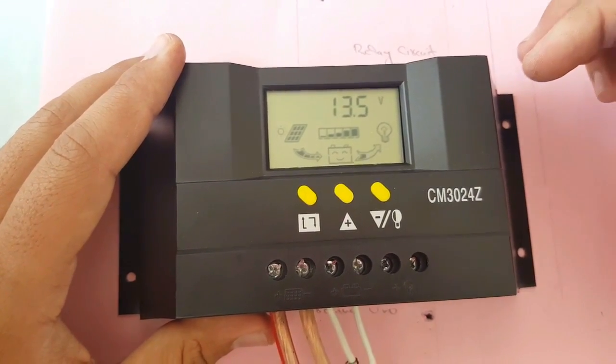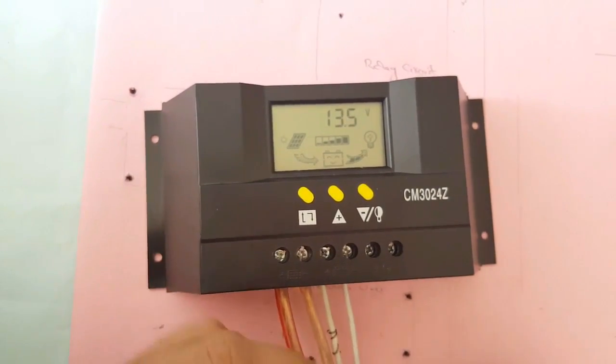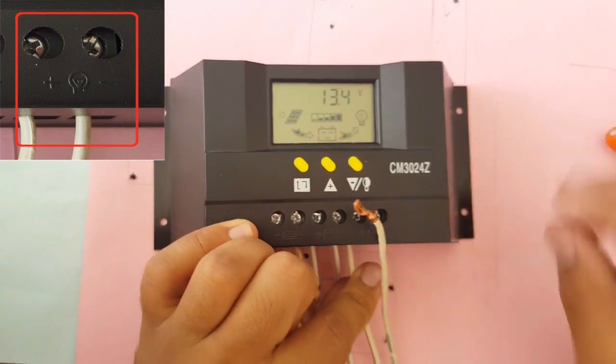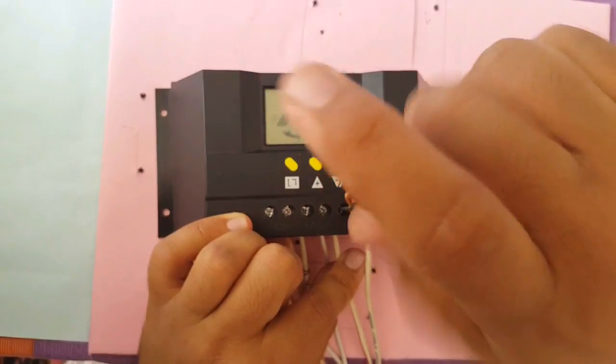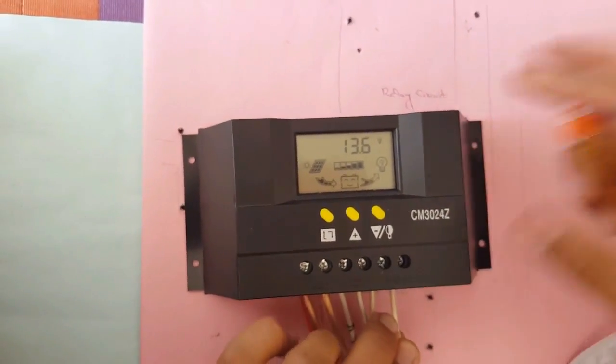After connecting the batteries and the solar panel to the solar charge controller, now we are connecting the load to the solar charge controller. The left side two holes on the charge controller is for the load connection. From here, you can give direct 12 volt DC to your load or give it to an inverter as input for getting AC power.